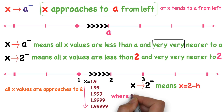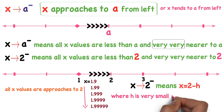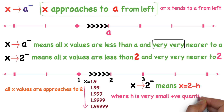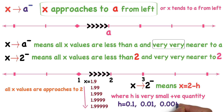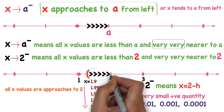That means x equals 2 minus H, where H is a very small positive quantity. For example, if H is 0.1 and I substitute in x equals 2 minus H, I get 1.9. If H is 0.01, substituting in 2 minus H gives x equals 1.99. So x approaches to 2 from left means all x values are in the left neighborhood of 2.